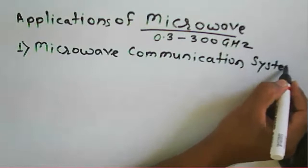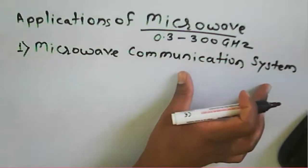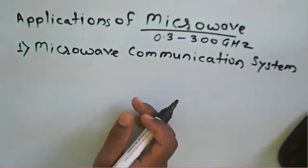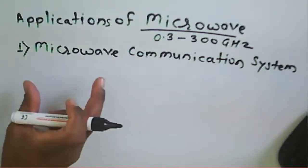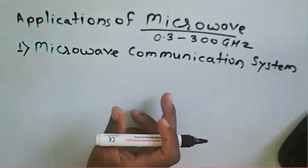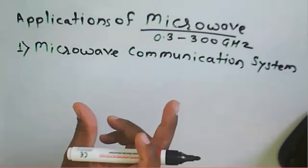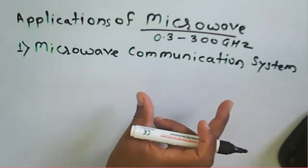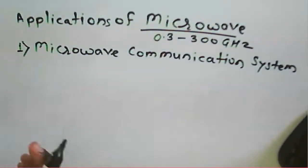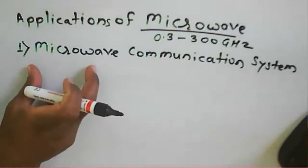The first application is the microwave communication system. Microwaves are used in communication because they provide a large or higher bandwidth. This allows the microwave system to carry voice, digital data, television data, or television signals. The microwave is used as a carrier for voice data, digital data, or television data — this is what constitutes a microwave communication system.